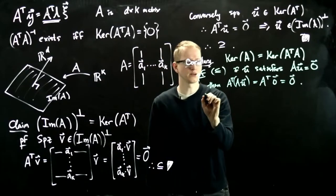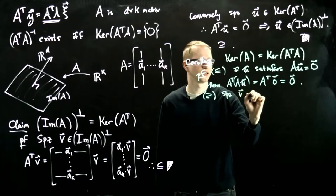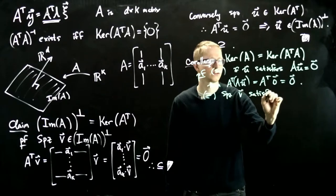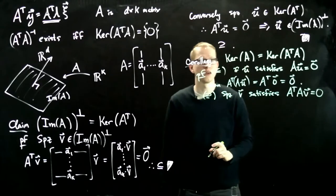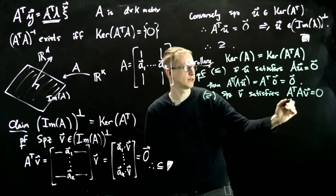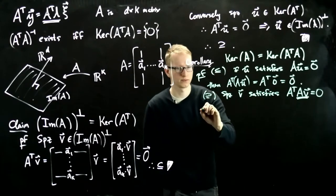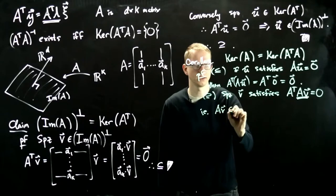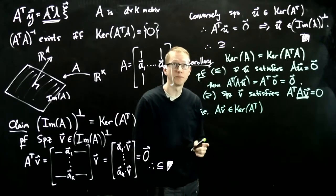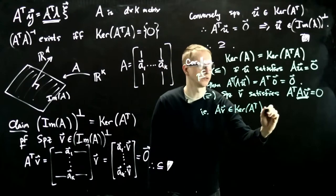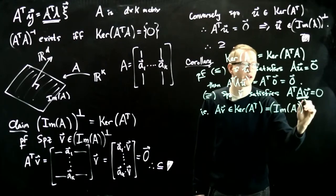Let's look at the other containment. So suppose V satisfies A transpose AV equals 0. Then what this means is that AV is in the kernel of A transpose. But by the previous claim, the kernel of A transpose equals the orthogonal complement of the image of A.